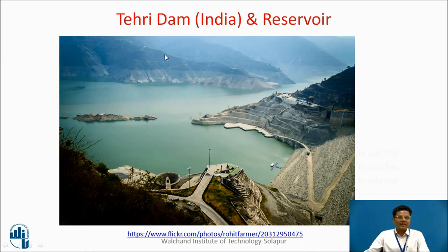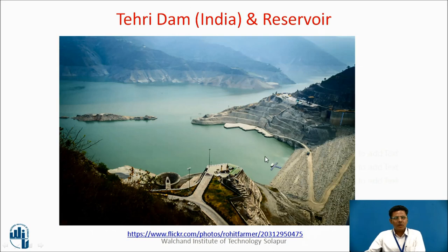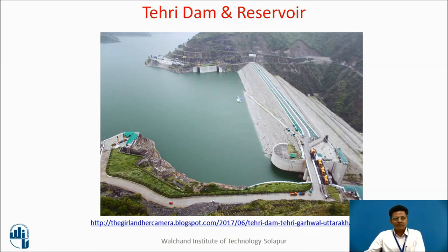Here you can see Teheri dam from India. A barrier constructed across a river is called a dam, and the pool of water formed is called a reservoir. This is the well-known Teheri dam, constructed as an earth dam, over 250 meters in height. In one picture, the water level is quite low. In another, the dam is almost full and water is passing over the spillway. You can imagine that at every level the storage capacity will be different.